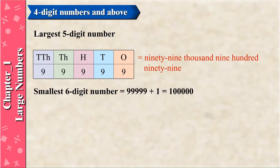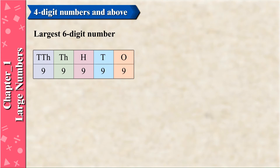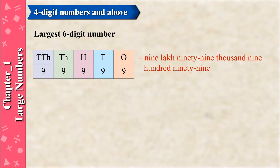The smallest six-digit number is 99,999 + 1 = 1,00,000. The largest six-digit number is 9,99,999.